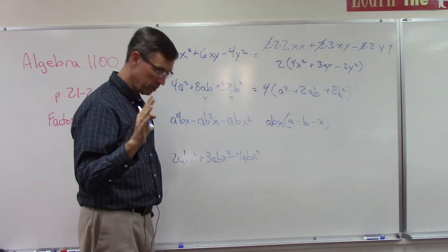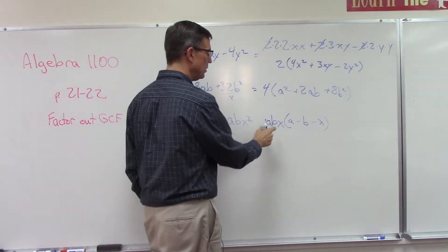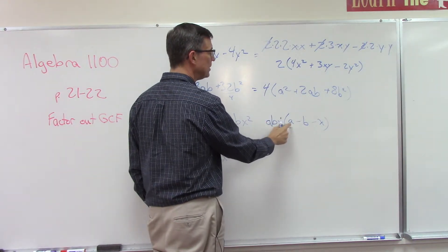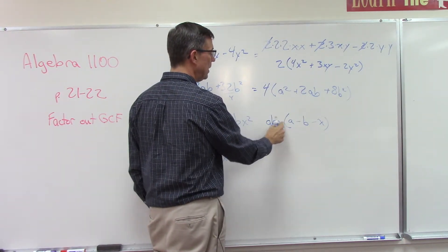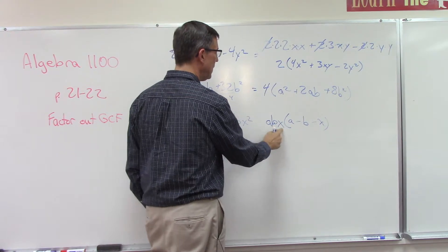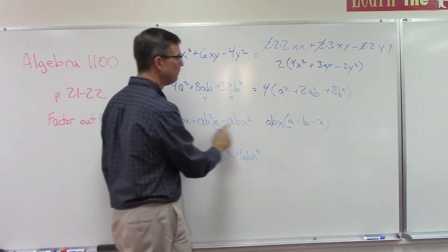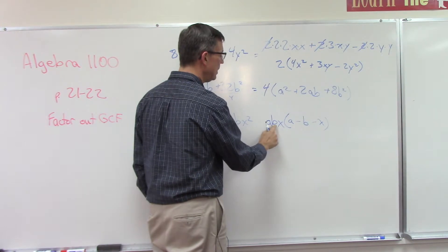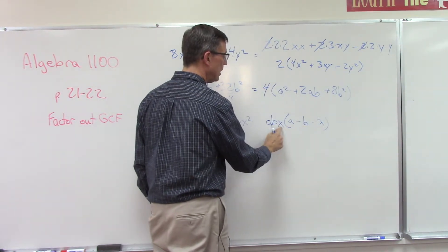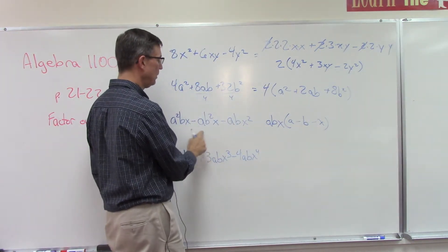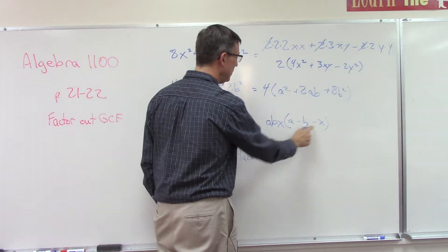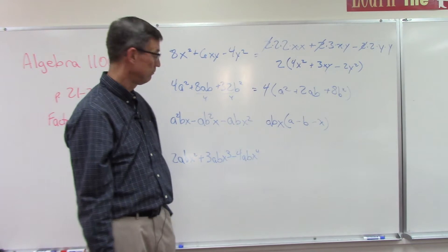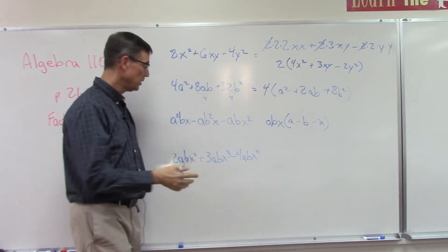When you think you're done, don't stop — go back and check your work with distributive property. Take this times the first term: ab times a gives a²b, times bx gives ab²x — yes, that's what I want. Times negative b gives negative ab²x — yes. And the last one: x squared, keeping a and b, both negative. Not too bad.